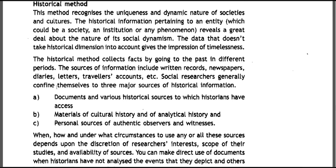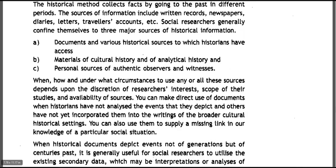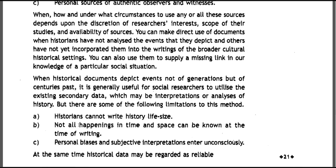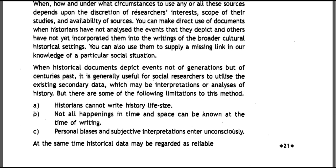Social researchers generally confine themselves to three major sources of historical information: first, documents and various historical sources to which historians have access; second, materials of cultural history and of analytical history; and third, personal sources of authentic observers and witnesses. When, how, and under what circumstances to use any or all of these sources depends upon the discretion of researchers, their interest, the scope of their studies, and the availability of resources.